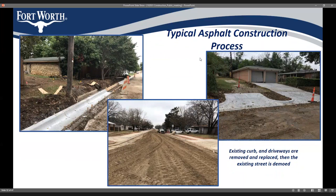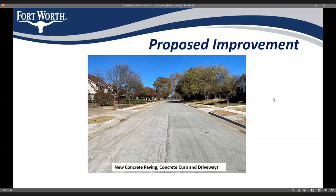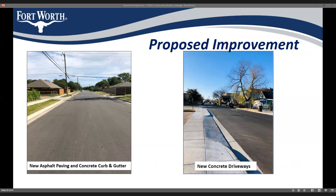For asphalt streets on this project, the existing curbs and driveways are first removed and replaced, then the existing pavement is removed in preparation for repaving. Here's an example of what a new concrete street looks like — you can see the integrated curbs and gutters, the concrete driveways, and the sidewalks on the side. And here's what new asphalt streets will look like: brand new pavement, concrete curbs and gutters, new driveways, new sidewalks.